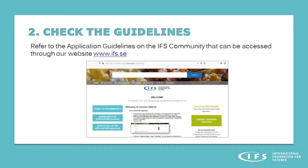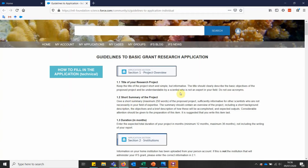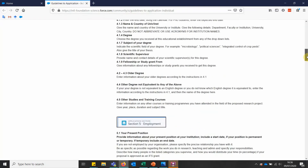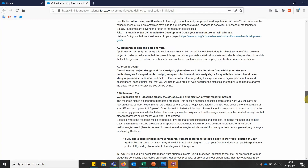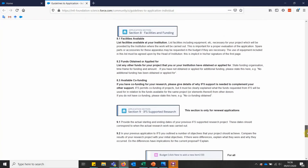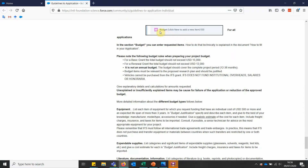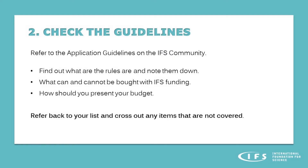Check the guidelines. The application guidelines for the IFS grants can be found on our online platform, the IFS Community, which can be reached through our website. When you have logged into the IFS Community, click on guidelines for application content. Then scroll down almost to the bottom of the page where you will find information on preparing the budget for an IFS application. Carefully read this document, find out what the rules are and note them down. Find out what can and cannot be bought with IFS funding and how you should present your budget. Refer back to your list and cross out any items that are not covered by IFS.